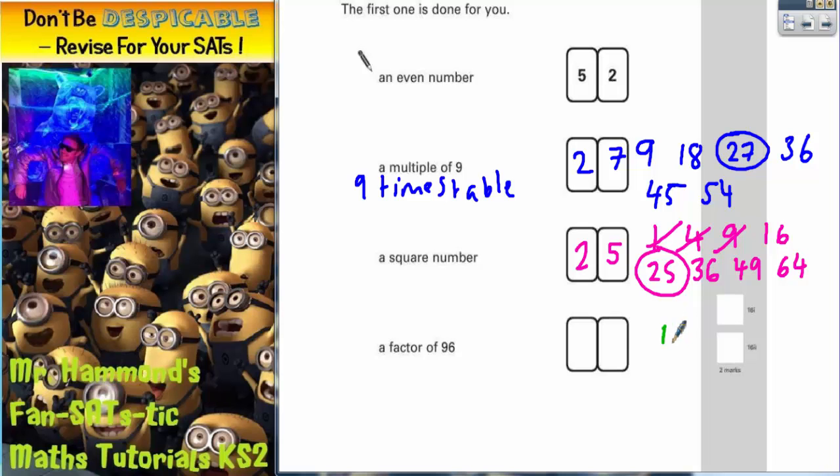So we can have 1 times 96, we can have 2 times 48, we can have 3 times 32, we can have 4 times 24,